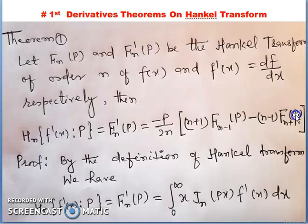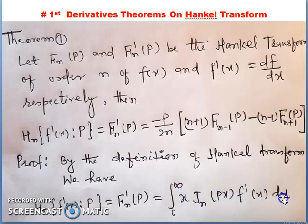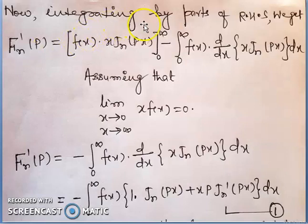Now let us see the proof of the first derivatives of the Hankel transform. We start with f'(x). Now, integrating by parts the right-hand side of the equation from 0 to infinity: x * jn(px) * f'(x) dx. We will evaluate this result using integration by parts.